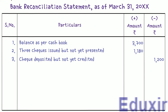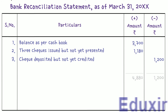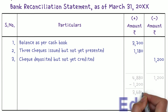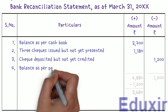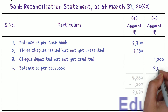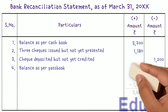The next step is to find the balance as per the passbook. The total of all entries in the plus amount column is 4880 rupees. The total of all entries in the minus amount column is 1200 rupees. Subtracting 1200 from 4880 gives us 3680 rupees - this represents the balance as per the passbook. We write the particulars as 'balance as per the passbook' and record 3680 rupees in the negative amount column, completing the bank reconciliation statement.